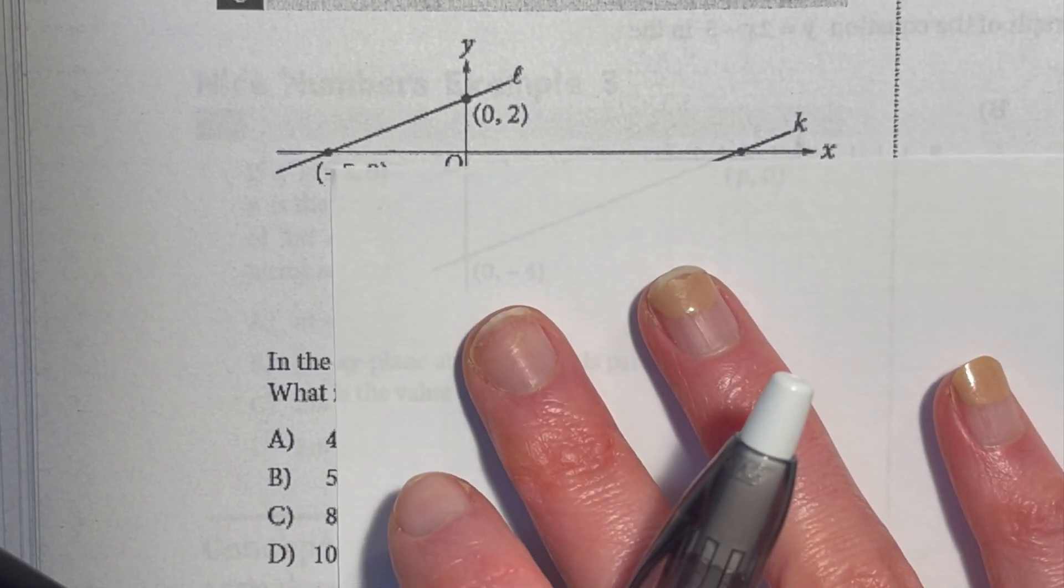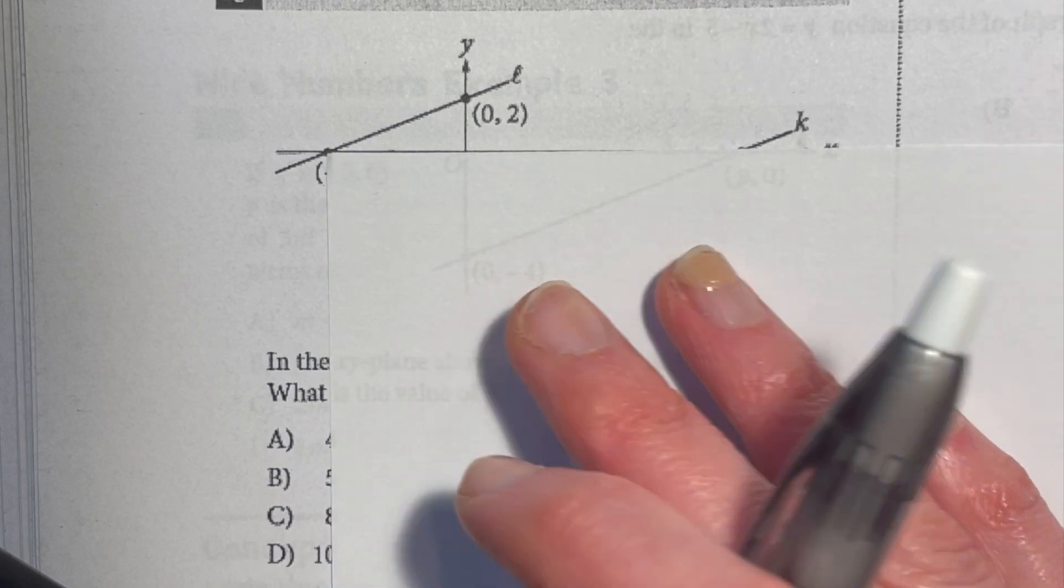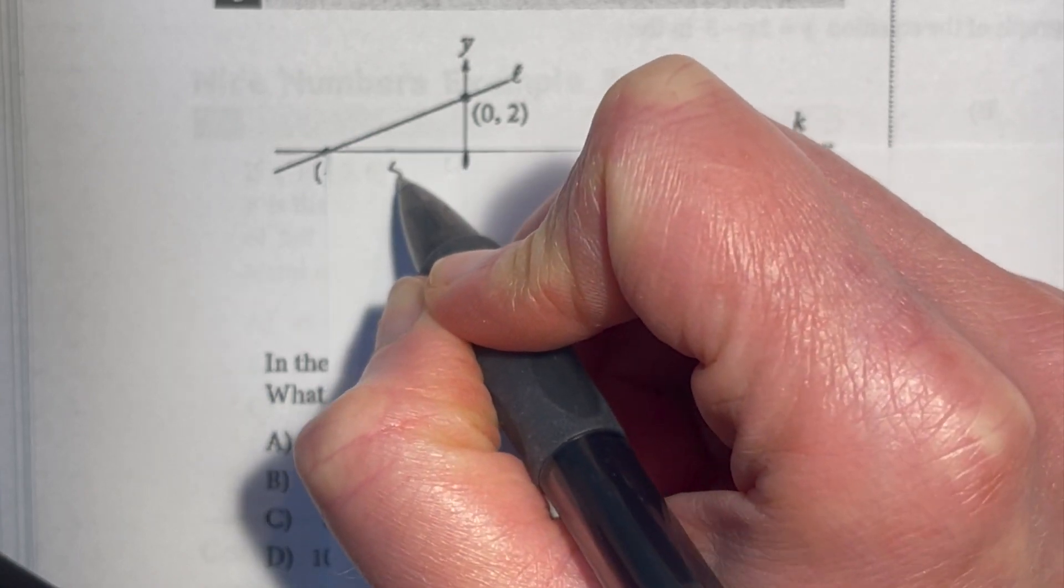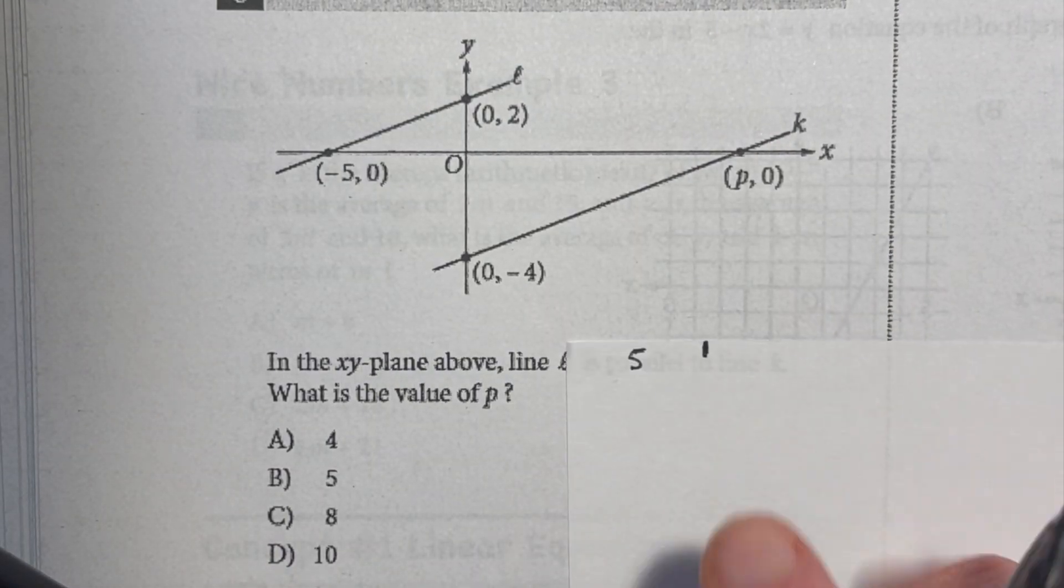I know that from negative five to the origin is five units, so I'm going to put my corner of my bubble sheet at the negative five, and then I'm going to mark it here. That is five units long. So if this question is asking me what is p, I can just see how many times that five units fits.